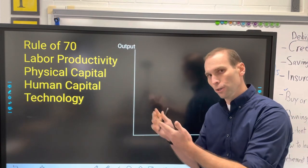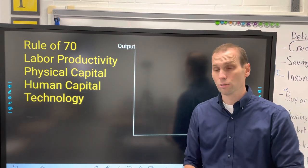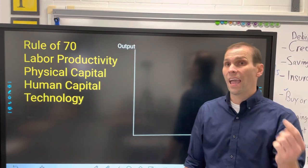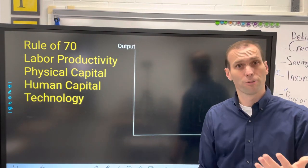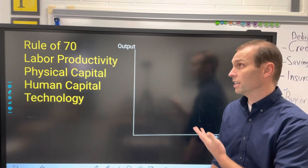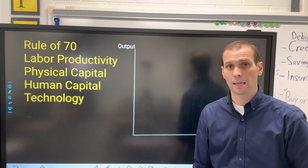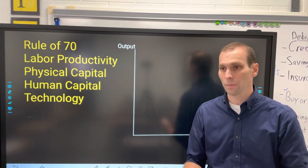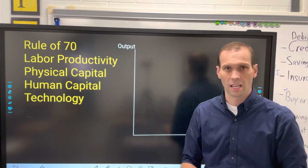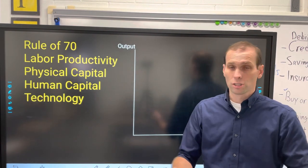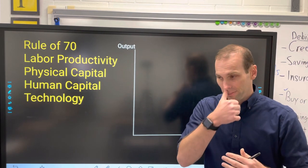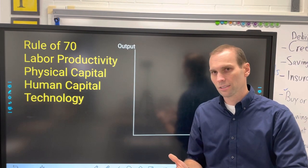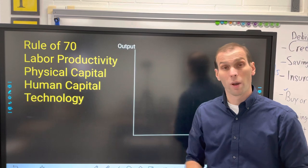If you use the rule of 70, you take the growth rate — 5% — and divide it into 70. So 5 goes into 70 fourteen times. That's how many years it'll take for the economy to double in size. It's a way of measuring compound interest in a very simple way.